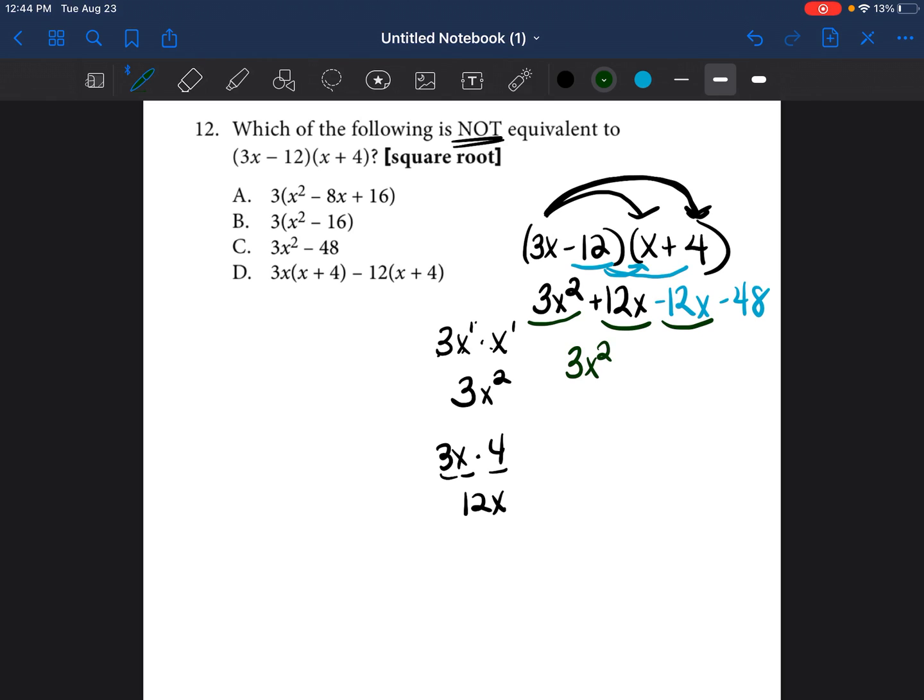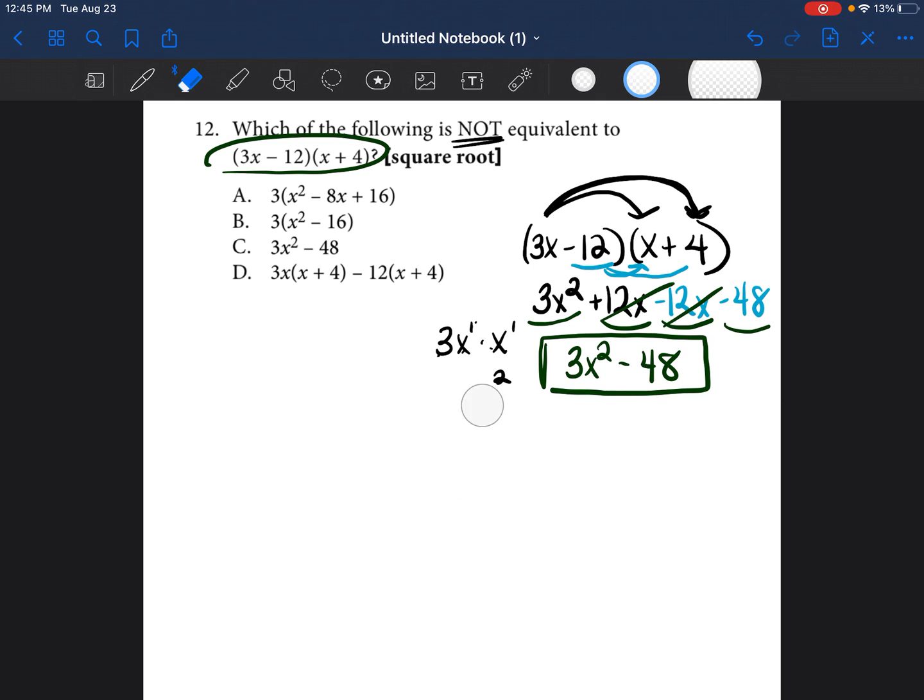12 minus 12 is 0. So these two just kind of get canceled out. And then negative 48, there is no other constant or number by itself. So we just bring it down. So we now know that this is also equivalent to 3x squared minus 48. So now let's go ahead and see if 3x squared minus 48 is equivalent to A, B, C, or D. Which one is it not equivalent to? So we already see that C is equivalent to 3x squared minus 48 because it's the exact same. So we know C is not going to be the answer.